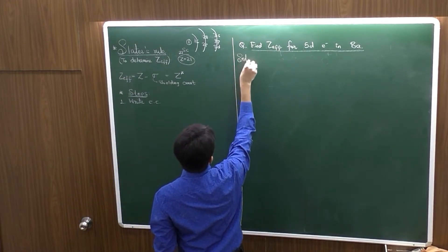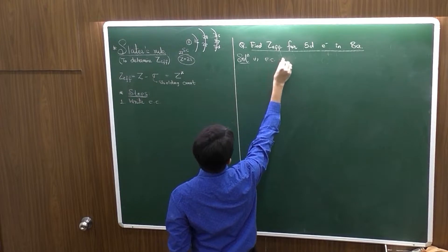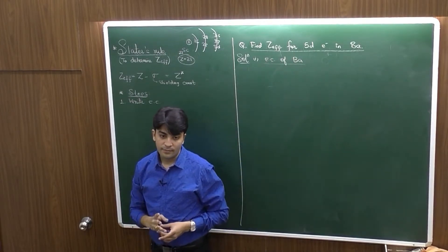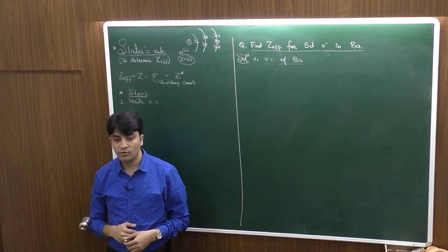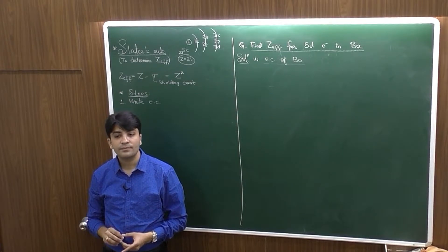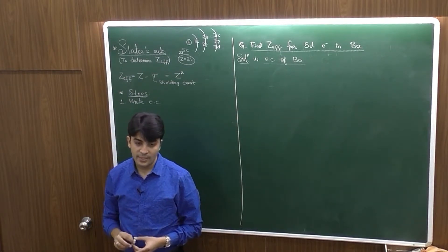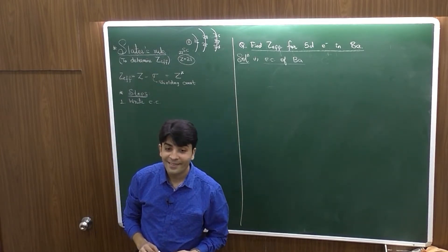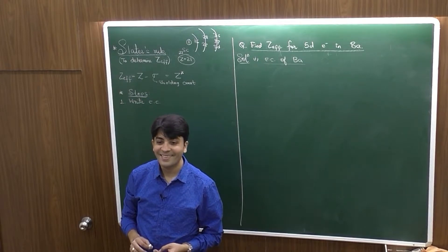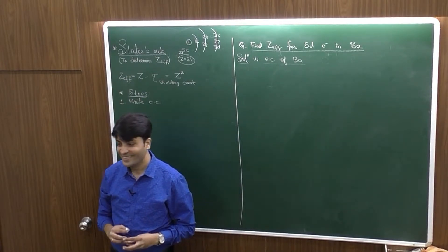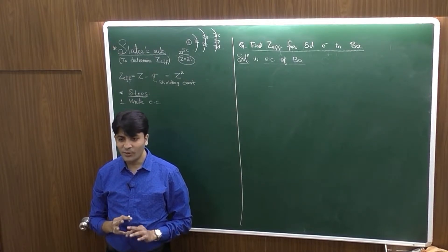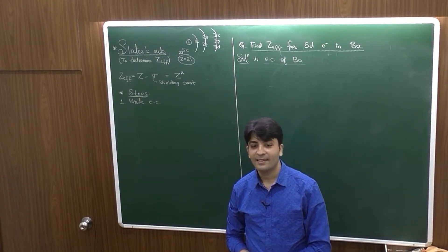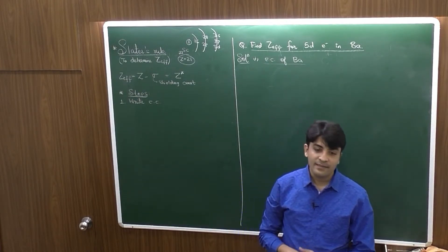Electronic configuration of barium. Now, to write the electronic configuration, I need to know its atomic number or the placement can also give you the atomic number easily. It's a group two element placed in which period? 6th period. It is 6th period.